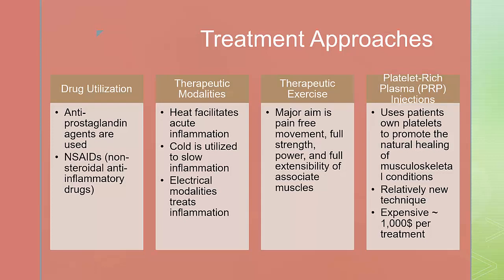Treatment approaches — some different ways to heal injuries. We can utilize drugs to help us heal. Antiprostaglandin agents are used to combat inflammation. These are most commonly found in over-the-counter medications called non-steroidal anti-inflammatory agents, also known as NSAIDs. Thermal agents can also be utilized; heat facilitates acute inflammation, and vice versa, cold is utilized to slow inflammation. Electrical modalities may also be used to treat inflammation — ultrasound, microwave, and electrical stimulation are all examples.